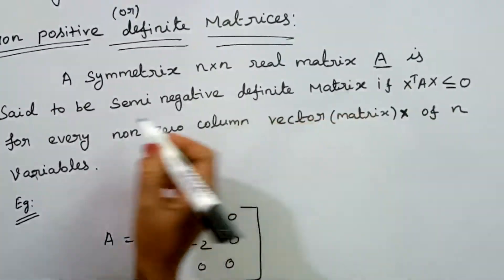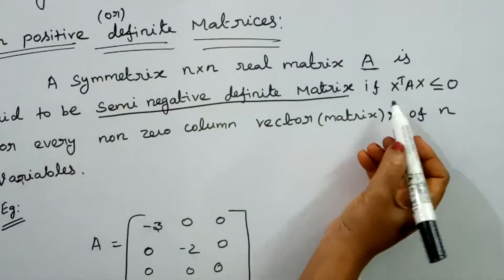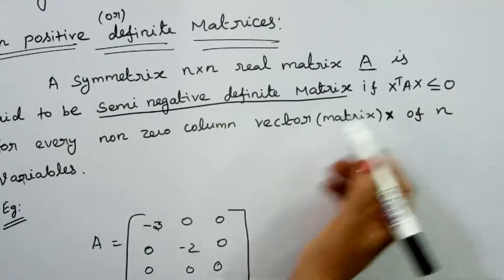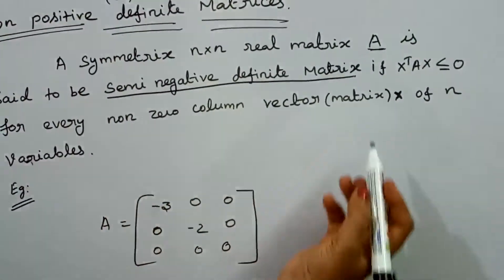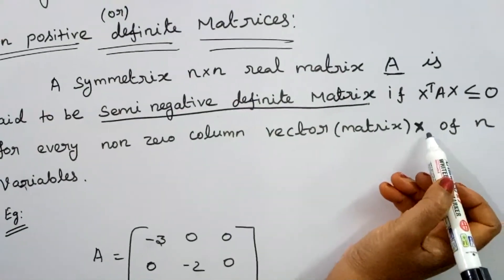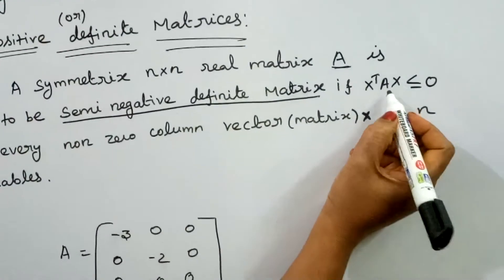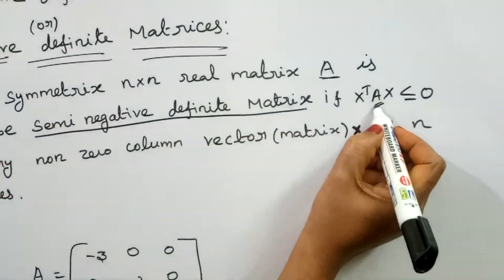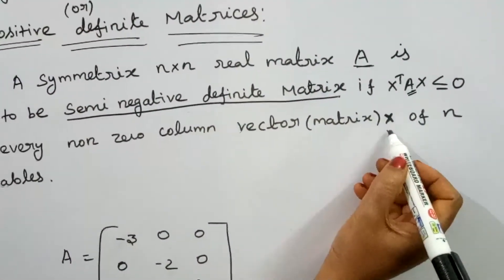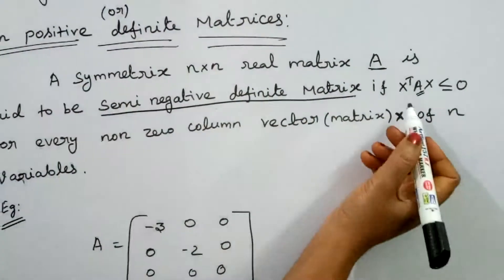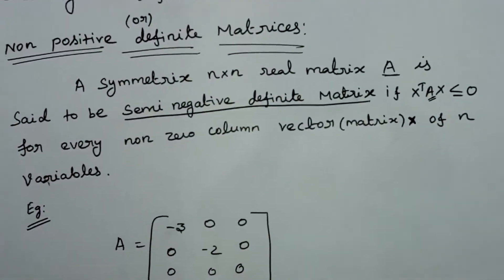This matrix is a semi-negative definite matrix if x transpose Ax is less than or equal to 0 for every non-zero column vector x of n variables. This condition must be satisfied.